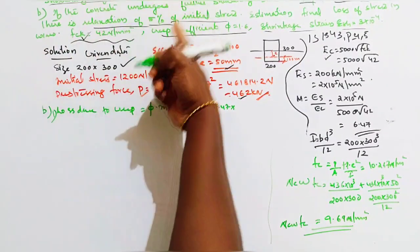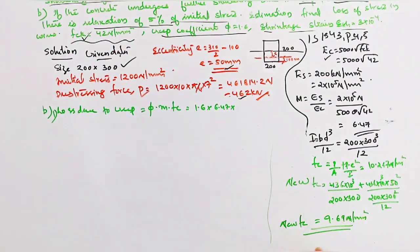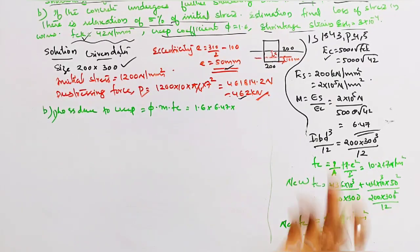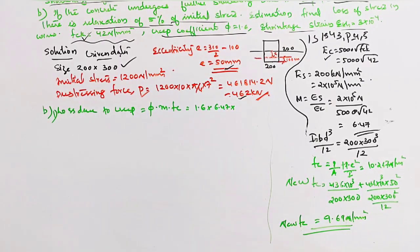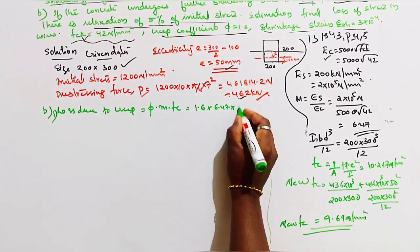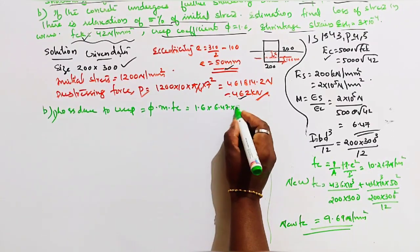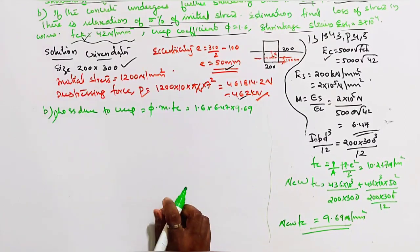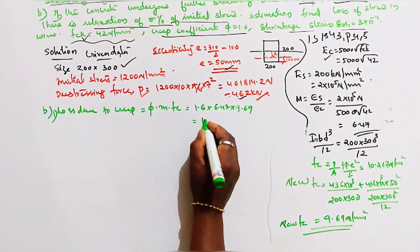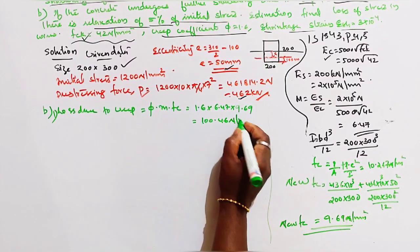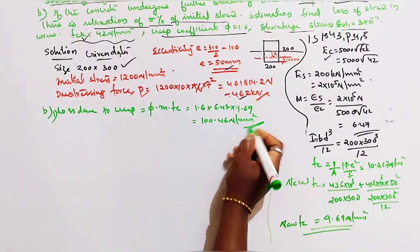Since the concrete undergoes further shortening due to creep, the updated fc value is used. Loss due to creep = 1.6 × 6.47 × 9.69 = 100.46 Newton per mm square.